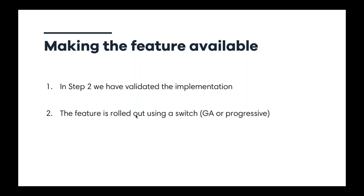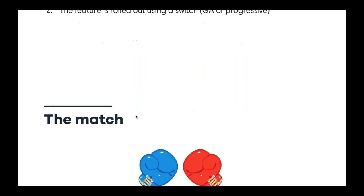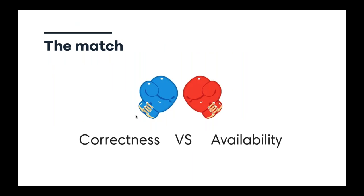When rolling out new features at HipTest, we have two approaches: making it available to all users at once, or for bigger features that may impact usage or performance, doing a progressive rollout — based on segment of users, whether they use test automation or BDD, or based on geography. The idea is to learn progressively from these different deployments. Once the feature is in the hands of real users, it's very important to make sure the platform remains available with a great user experience.